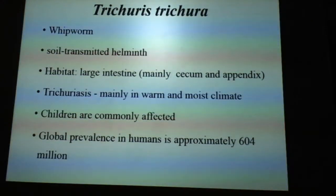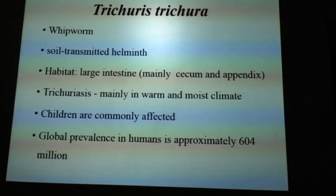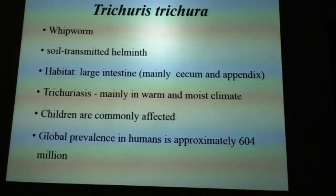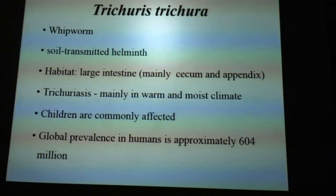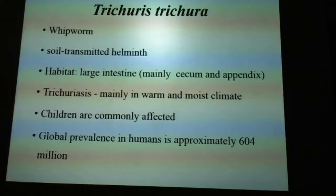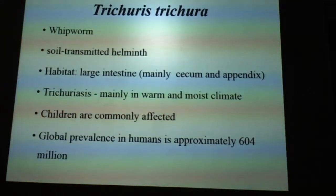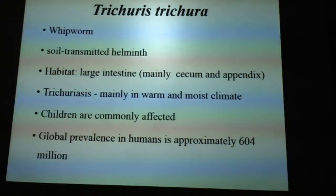It is mainly found in warm and moist climates. Children are more commonly affected by this infection, as they play with mud and their hands may easily get contaminated. Most parasitic infections are therefore commonly seen in children. There will be accidental contamination of eggs or larvae with human hands, then accidentally ingested without washing. Global prevalence in humans is approximately 604 million.